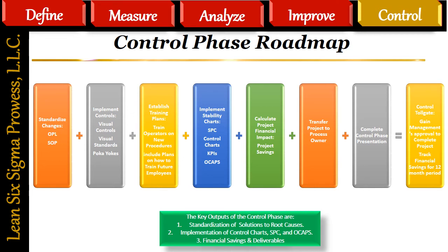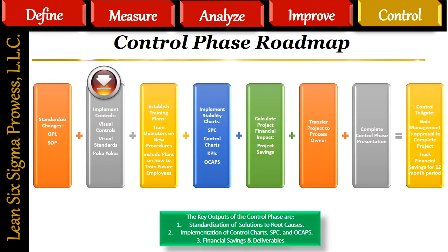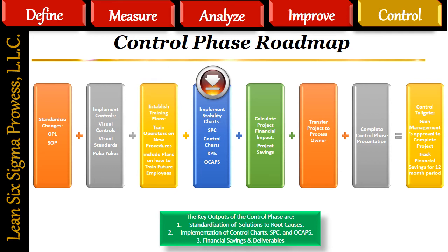The Control Roadmap is a summary of all of the steps required to complete the Control phase. Step 1: Standardize changes — the team will create One-Point Lessons (OPLs) and update or create Standard Operating Procedures (SOPs). Step 2: Implement controls — create visual controls, visual standards, and poka-yokes. Step 3: Establish training plans and train operators on new procedures. In the training plan, include how future employees will be trained and the frequency of repeat training. Step 4: Implement stability charts, Statistical Process Control (SPC) control charts, key process indicators, and Out-of-Control Action Plans (OCAPs). These methods will be new to the people on the floor, so the team will need to train them and ensure they implement these new procedures as part of their daily work.